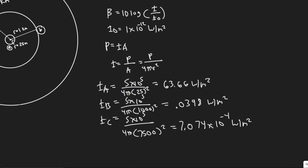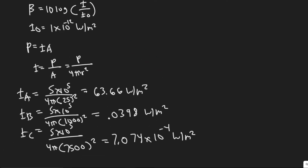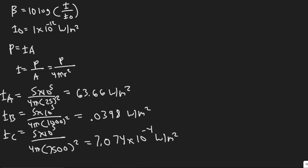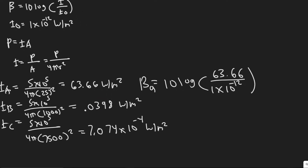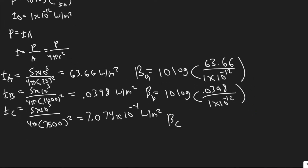Now we have the intensity at each distance — we just plug into the sound level formula. Beta A equals 10 log of 63.66 divided by 1 times 10 to the minus 12. Beta B equals 10 log of 0.0398 divided by 1 times 10 to the minus 12. Beta C equals 10 log of 7.074 times 10 to the minus 4 divided by 1 times 10 to the minus 12.